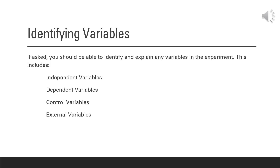You should always be able to identify the variables used in an experiment. This includes your independent variable — the variable that is modified to see a response — the dependent variable, which is the response, control variables that are held constant throughout the experiment, and possible external variables — things you can't control for. You must have independent and dependent variables, and if at all possible, a control. Remember that the subjects of your experiment are not variables. If you are testing an experiment on humans, the human is a subject, not a variable.